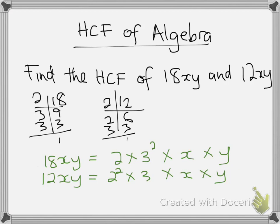Therefore, for highest common factors, we take common terms with the lowest power or the lowest index. Here, highest common factor is equal to 2 to the power 1, has got the lowest power. 3 to the power 1 has got the lowest power, times x the lowest power times y.